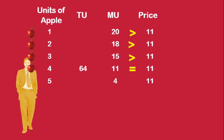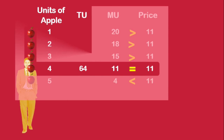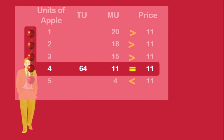If he consumes one more than the equilibrium quantity, say 5 units, marginal utility becomes less than the price. The consumer is a loser. It is advantageous for him to reduce his consumption. Hence, the consumer will be in equilibrium only by consuming 4 units of apple.